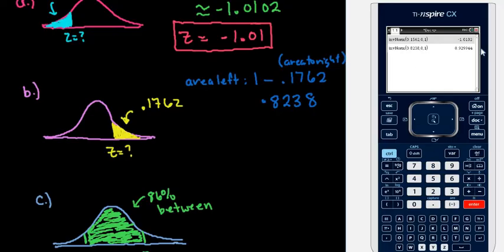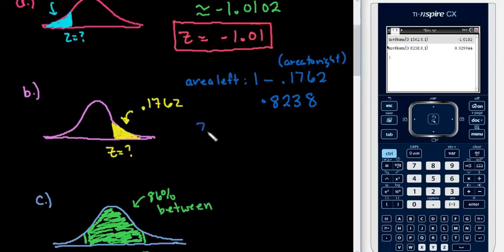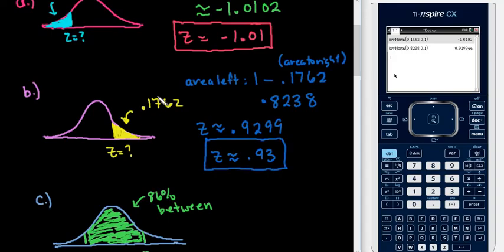And for this we end up with, so the z-score ends up being approximately .9299 is what the calculator gives us, the 4-4. So we would just round this to two decimal places and we would say that this is approximately .93. So an area that's shaded 17.62% to the right of it corresponds to a z-score of .93.